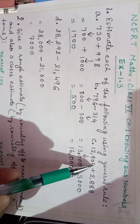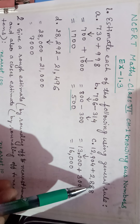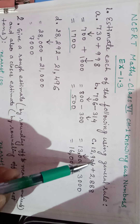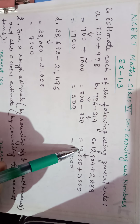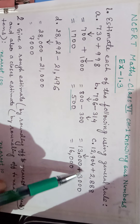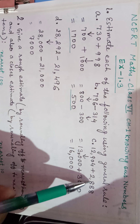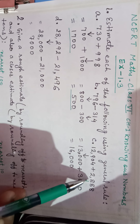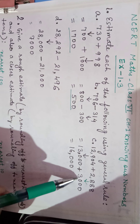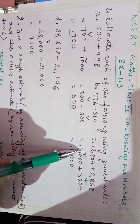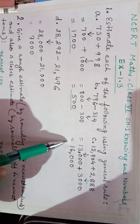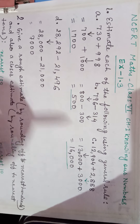Next: 12,904 plus 2,888. So 12,904 will be rounded as 13,000 because it is nearer to 13,000. And 2,888 will be rounded as 3,000. So 13,000 plus 3,000 equals 16,000. This will be the answer.